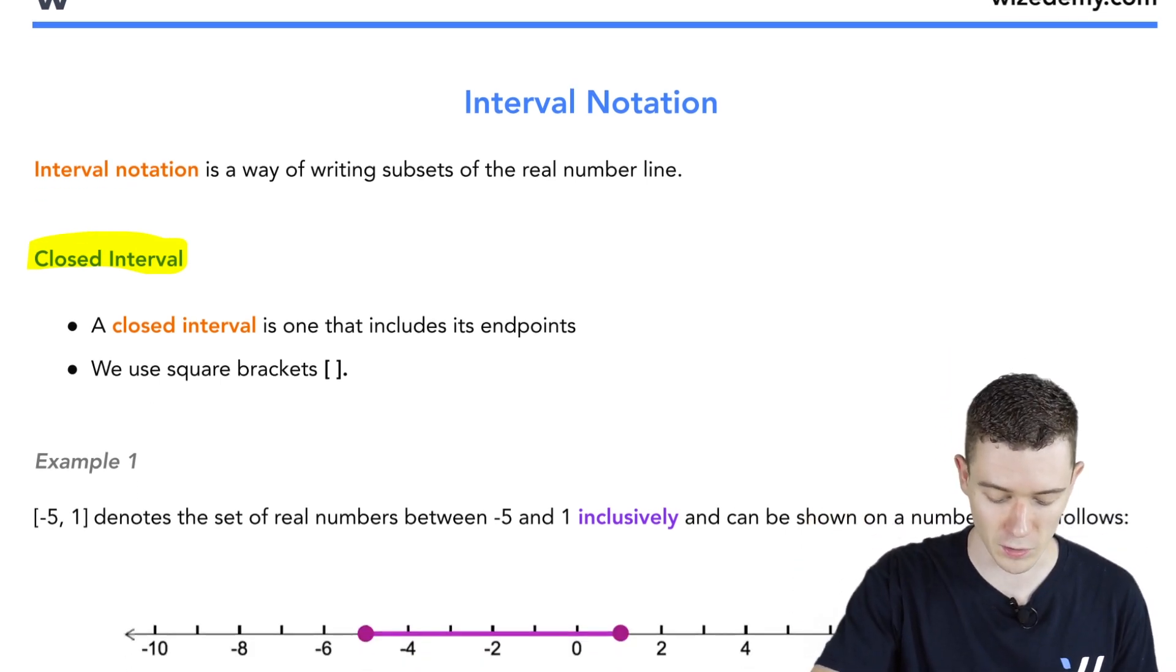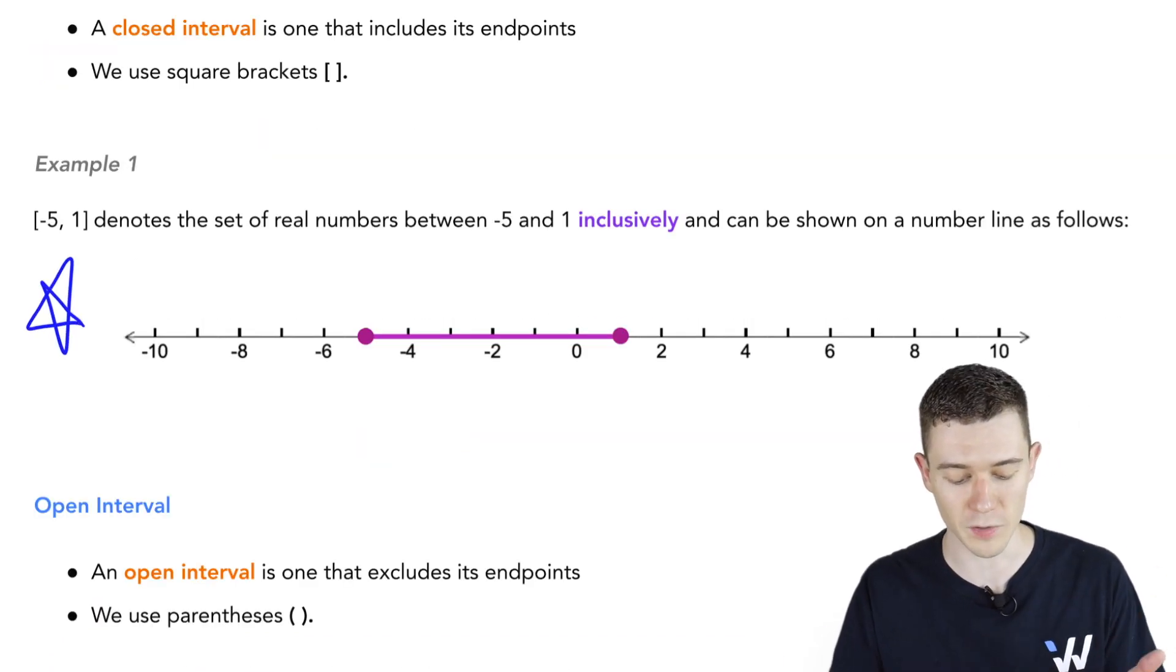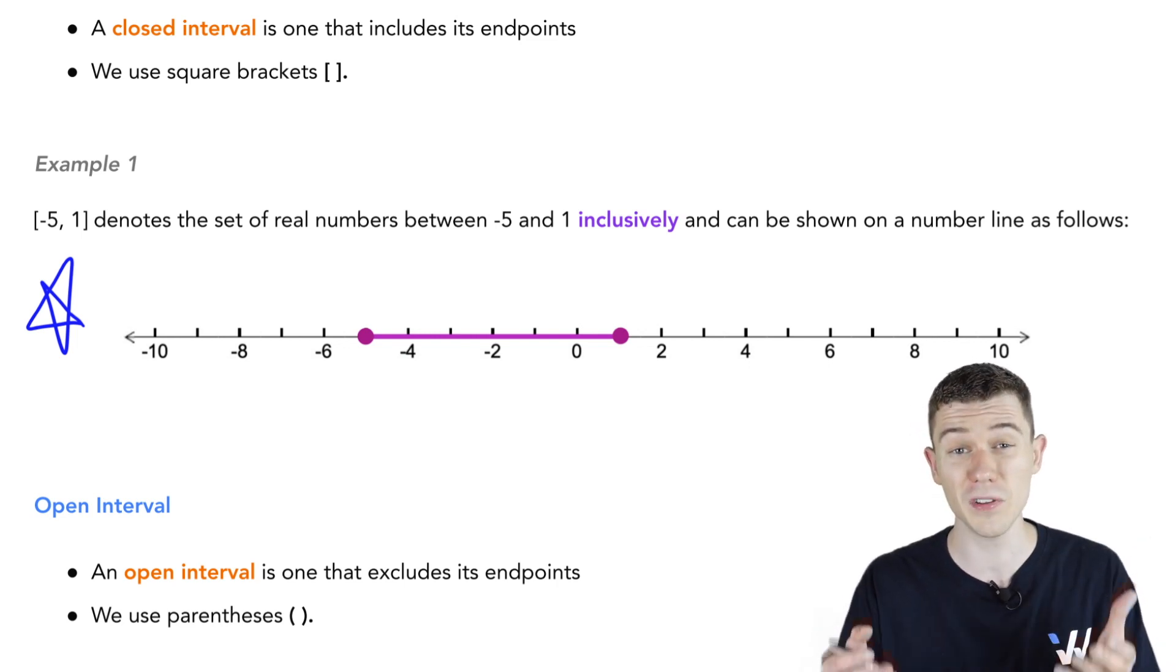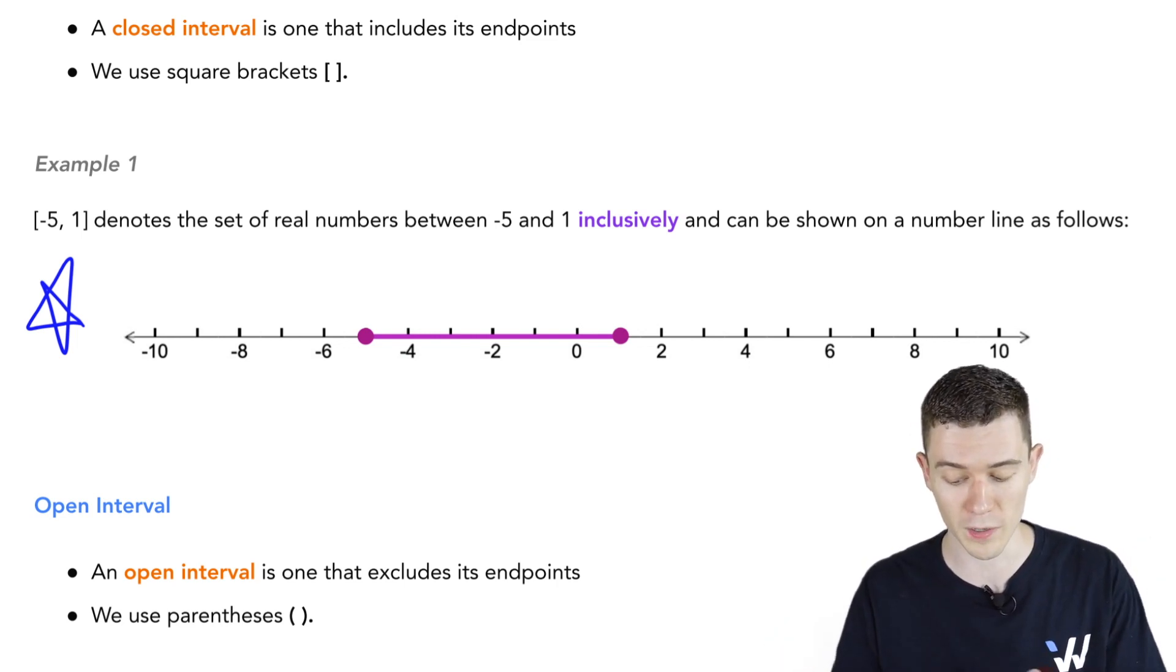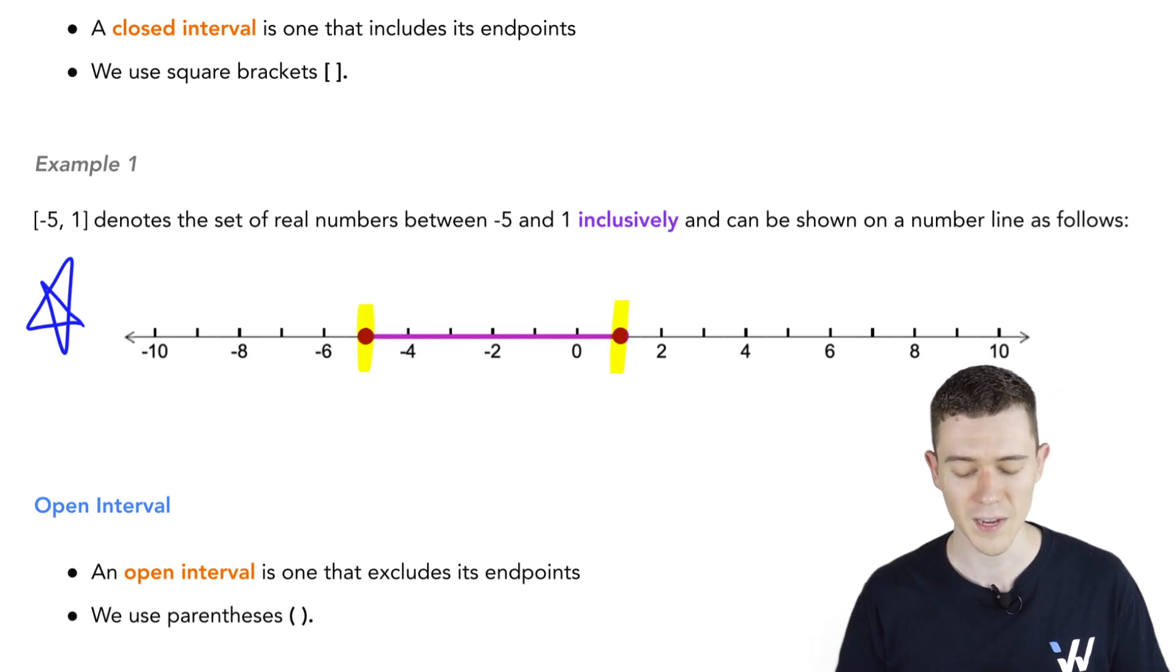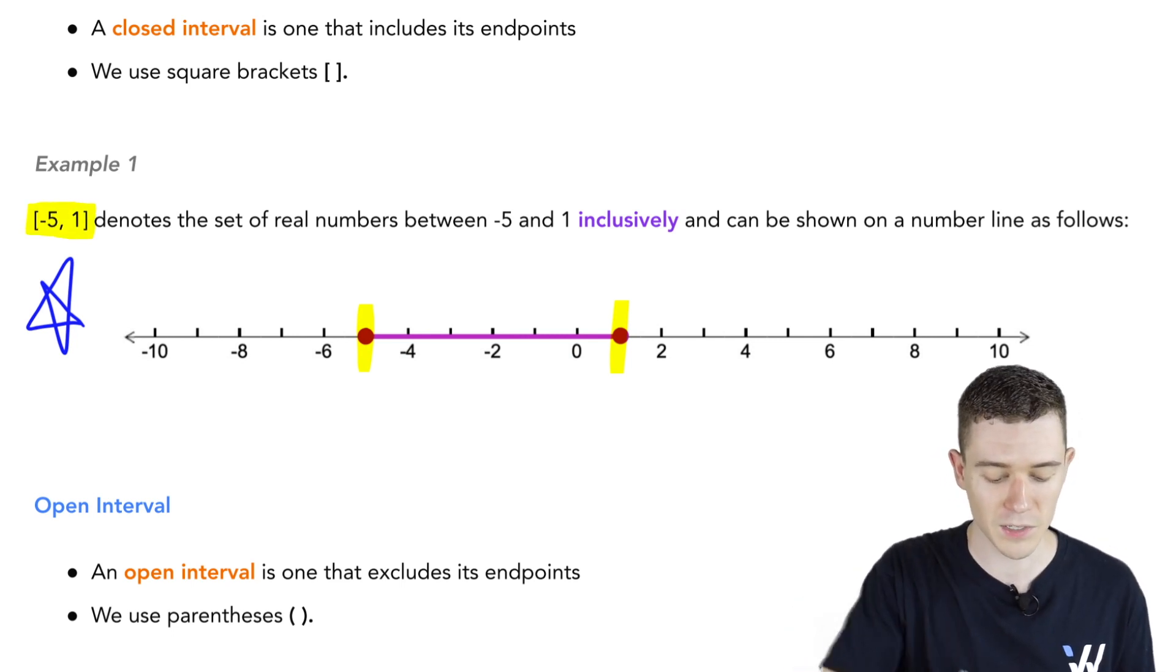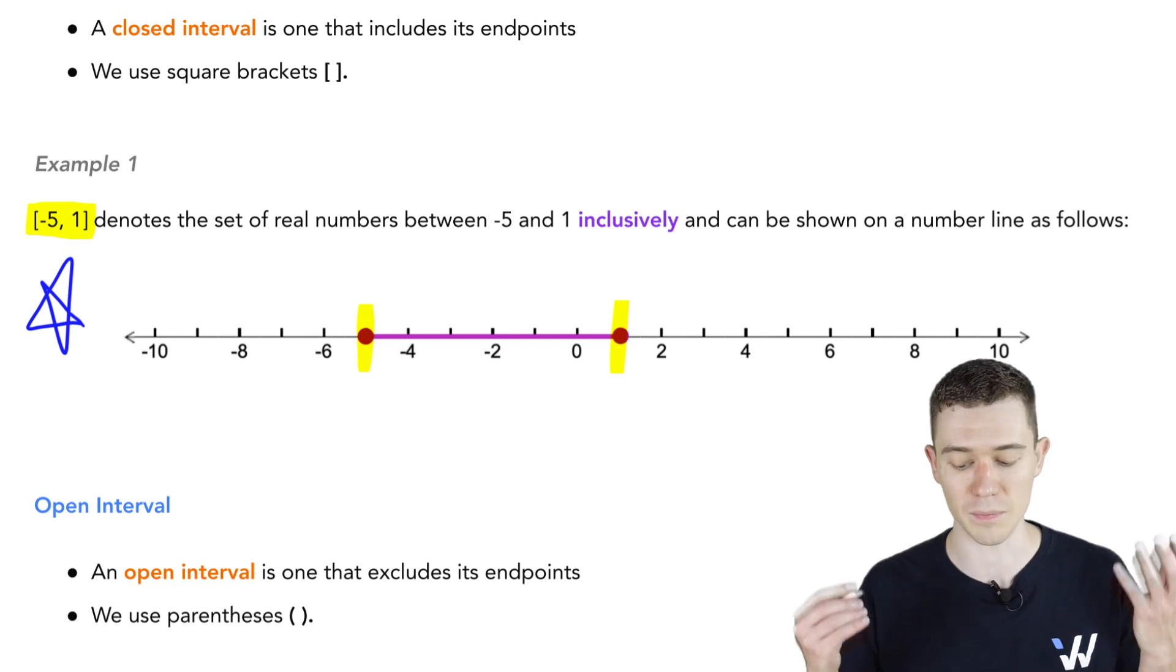This is what it looks like graphically. This line represents the interval minus 5 to 1 in brackets. Notice on this number line, it's filled in from the number minus 5 up to 1 with these two closed circles. That means we're including those endpoints in our interval, and it's denoted as minus 5 to 1 in brackets.